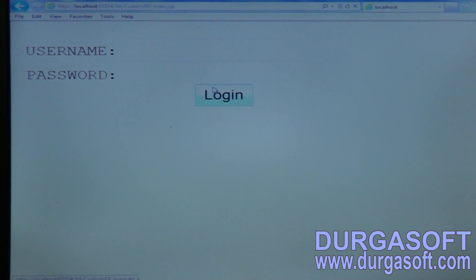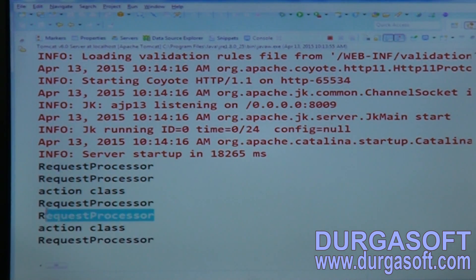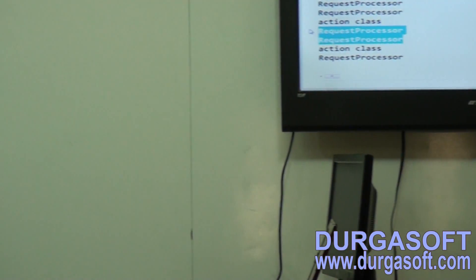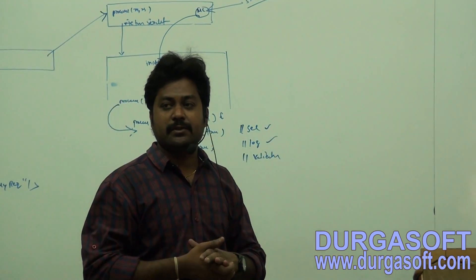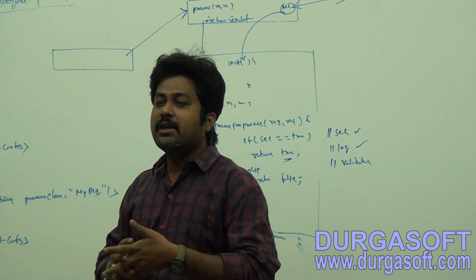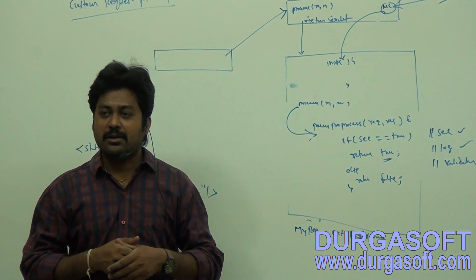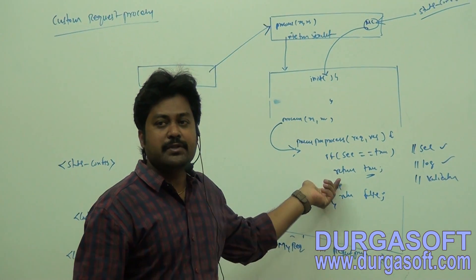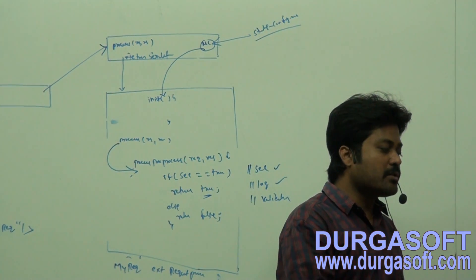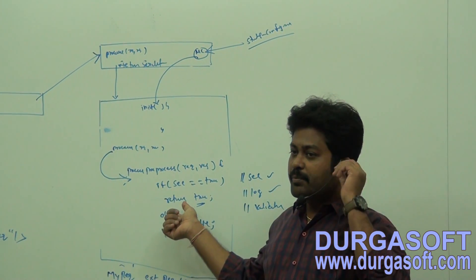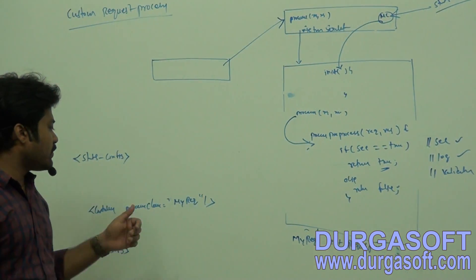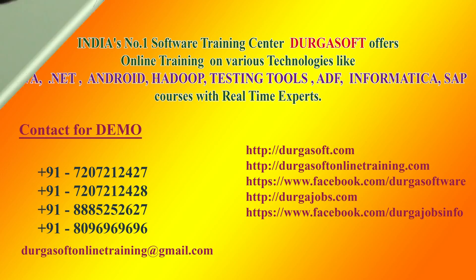For every request, processPreProcess method will execute first. If you have 100 use cases and want to check username/password for every request — such as detecting URL rewriting attacks — you can write those checks in processPreProcess. It executes before every controller operation. Configure your custom RequestToProcessor class using the controller tag in struts-config.xml.